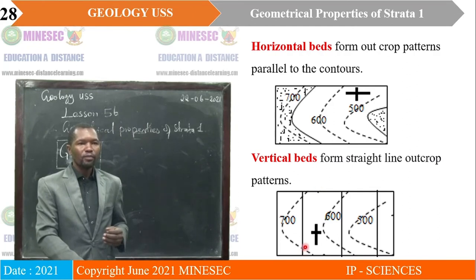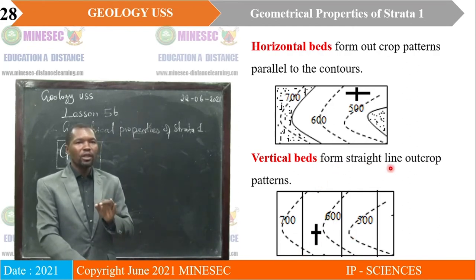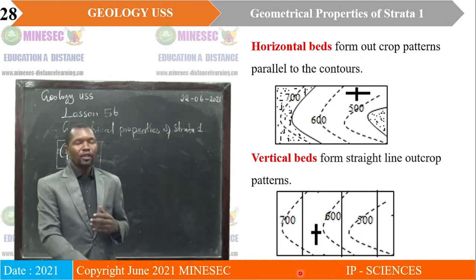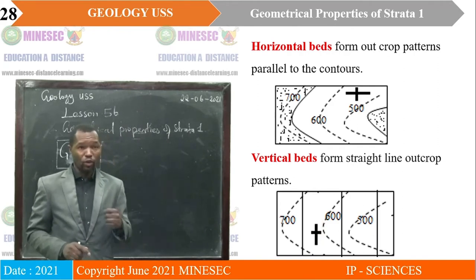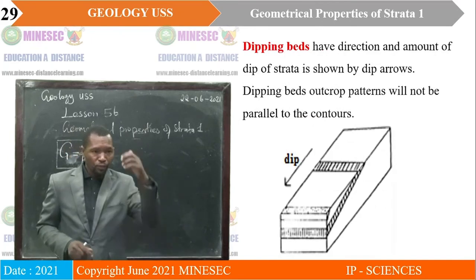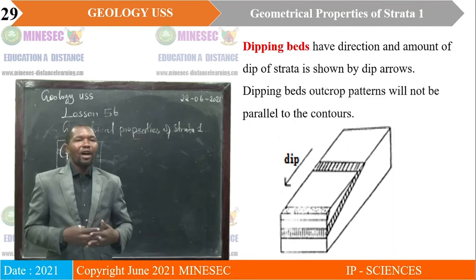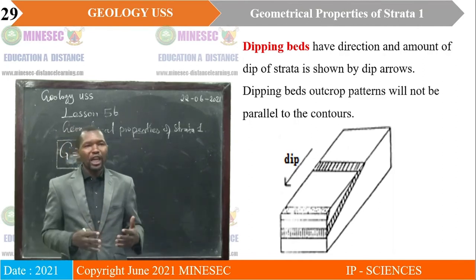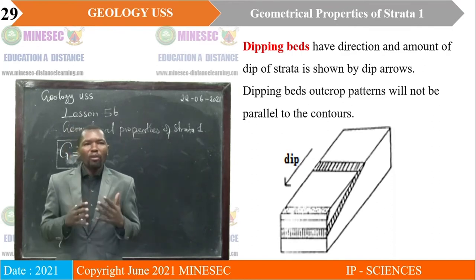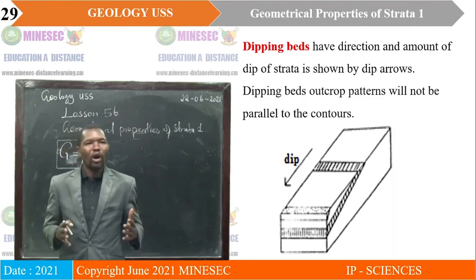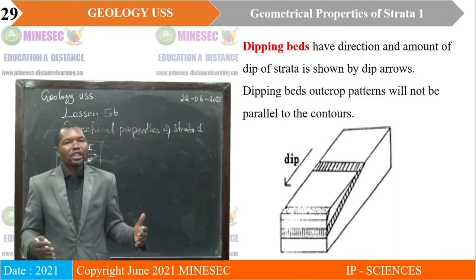For vertical beds, they form straight-line outcrop patterns. The contours cross the vertical bed boundaries, and the map symbol shows a vertical line longer than the horizontal line, indicating vertical strata. When interpreting a map, you must be sensitive to these symbols. For dipping beds, they show direction and amount of dip indicated by dip arrows. The dipping beds' outcrop patterns will not be parallel to contours, because the area has been affected by tectonic activities.